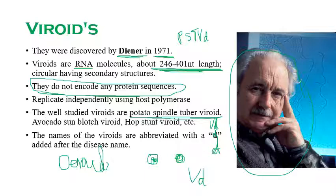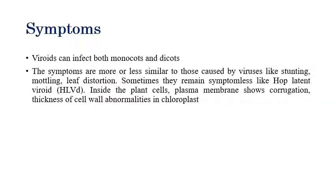Viroids can infect both monocots and dicots. Their symptoms are more or less similar to those of viruses — stunting, mottling, leaf distortion. Some viroids like hop latent viroid produce no symptoms, which is called a latent infection. Inside plant cells, the plasma membrane may show corrugations, thickening of cell walls, and chloroplast abnormalities.